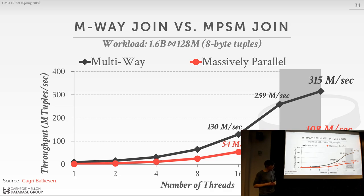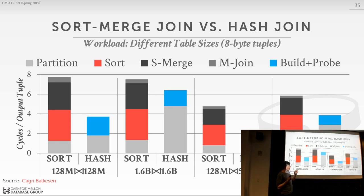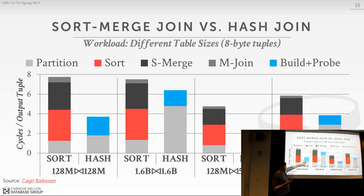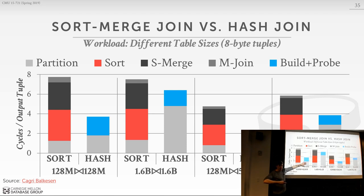The final comparison is radix hash join versus multi-way sort-merge join. The gray bars show the partitioning overhead — and with 1.6 billion tuples, you're paying a significant partitioning cost. This shows that hash join is always faster. Every database system should prefer hash join over sort-merge for this workload, and a non-radix hash join version would likely perform even better.